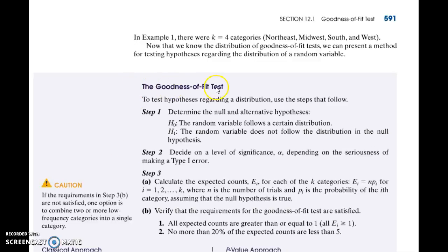For a goodness of fit test, our null hypothesis is that our random variable follows some predefined distribution, and our alternative hypothesis is that it does not follow that distribution.